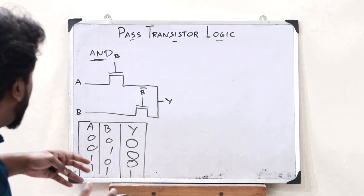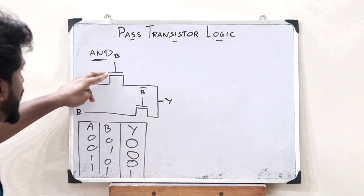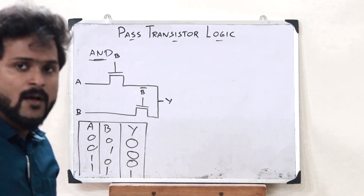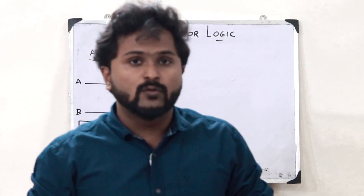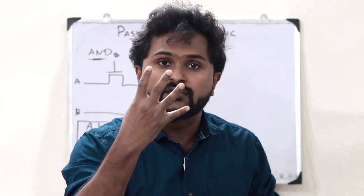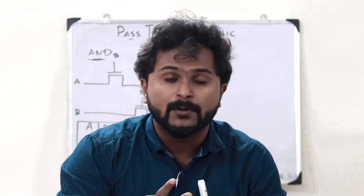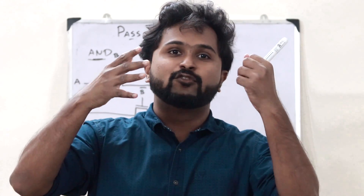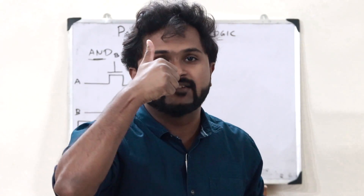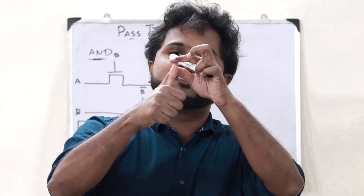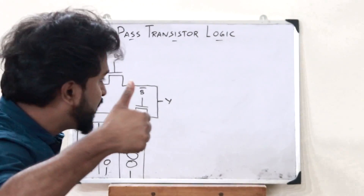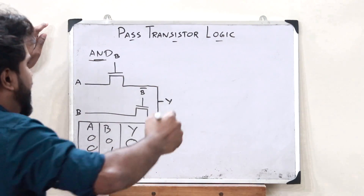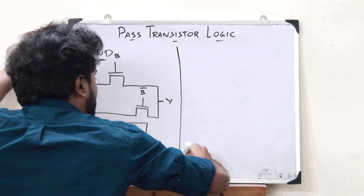We have obtained the AND operation using just two transistors. But in the case of a CMOS circuit, we required four transistors to perform the NAND operation, and then we had to pass it through an inverter which added two more transistors — six transistors total. These six transistors are effectively reduced to just two transistors using pass transistor logic. Now let us see how we can perform the OR operation.